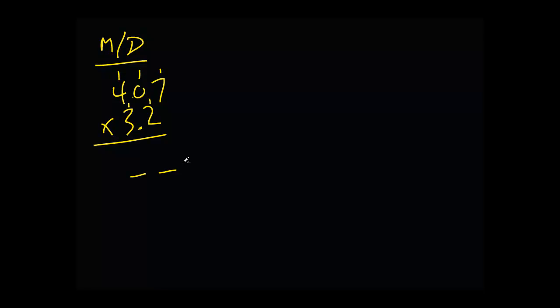So we have 4.07 times 3.2. That's going to equal 13.024. We've got to chop these guys off here. Our answer is going to be 13. And if this number were five, six, seven, eight, or nine, hypothetically we would have to round up to 14. That's an important point. So that's multiplying. Division's the same thing.